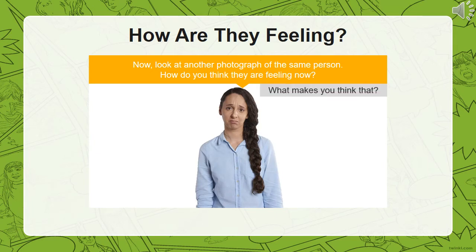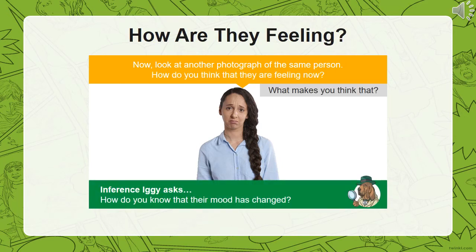Now look at another photograph of the same person. How do you think they are feeling now, and what makes you think that? I think this person is feeling sad. Inference Iggy has asked us a question: how do you know that their mood has changed? Make some notes in your home learning book now.